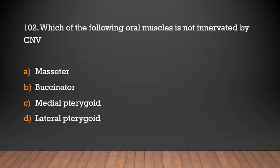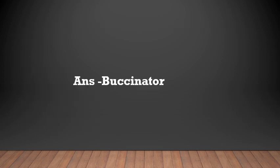Which of the following oral muscles is not innervated by cranial nerve 5? Options: masseter, buccinator, medial pterygoid, lateral pterygoid. Answer: Buccinator.